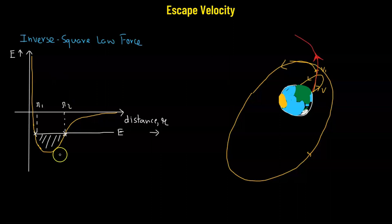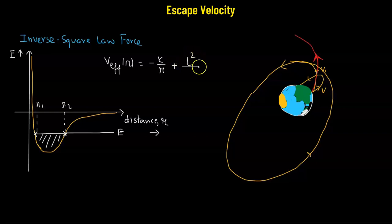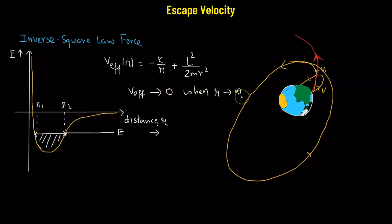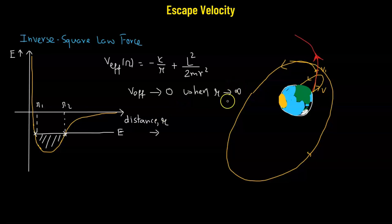Coming back to our energy diagram, an object trapped in the potential well or within bound states can only come out of this well if we let the object move to a certain distance where the potential drops to zero. We know that the effective potential is given by negative K over R — the potential due to the inverse square law force — plus the fictitious term L² over 2mR². So V_effective approaches zero as R approaches infinity. This means that for an inverse square force field, the force field extends all the way to infinity, and therefore escape velocity is the minimum velocity required to take the object to infinity.